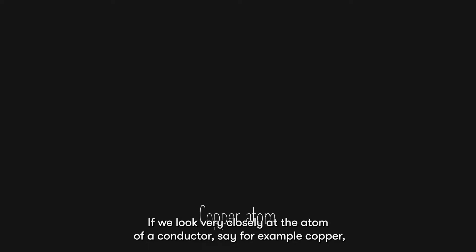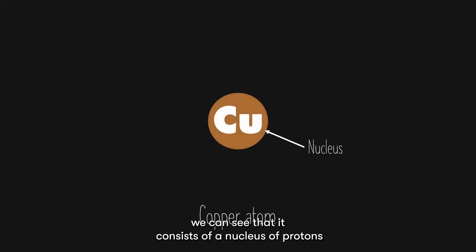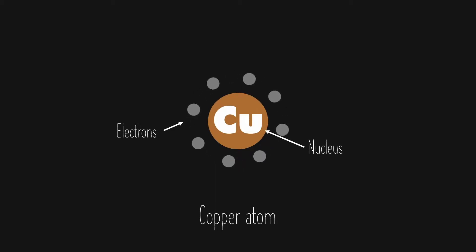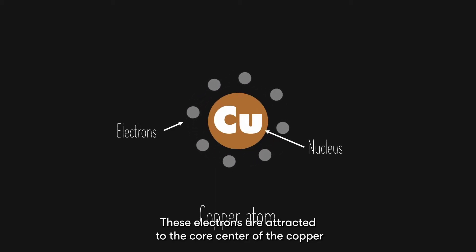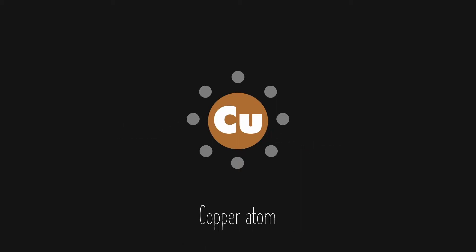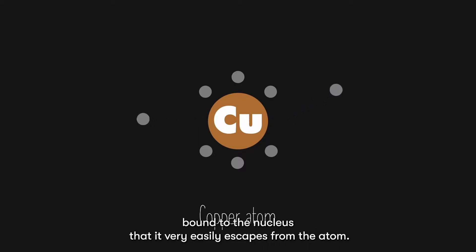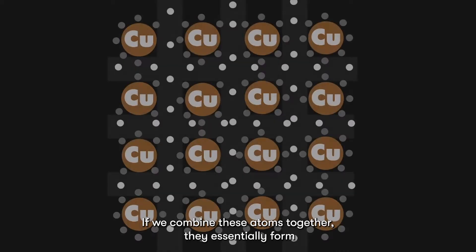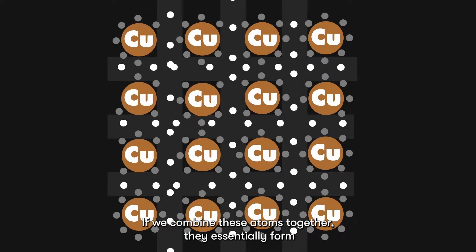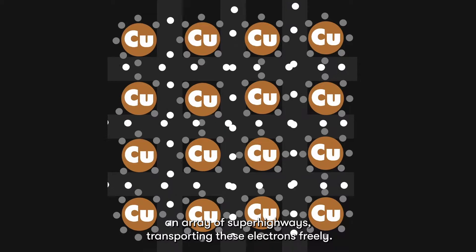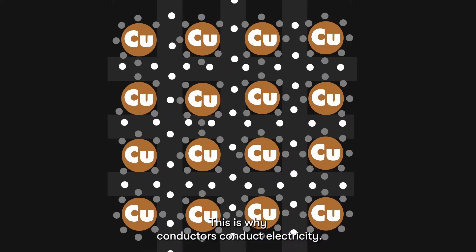If you look very closely at the atom of a conductor, say for example copper, we can see that it consists of a nucleus of protons and neutrons, with electrons floating around it. These electrons are attracted to the core center of the copper atom by the positive nucleus. For a conductor like copper, some of these electrons are so weakly bound to the nucleus that they very easily escape from the atom. If we combine these atoms together, they essentially form an array of superhighways, transporting these electrons freely. This is why conductors conduct electricity.